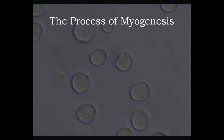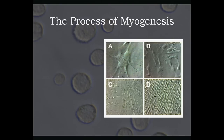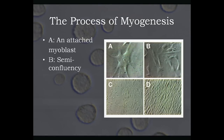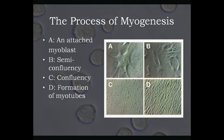This slide will illustrate the process of myogenesis. Picture A is of an attached myoblast to a container surface. Picture B is of semi-confluency, and picture C is of confluency. When myoblasts become confluent, they basically stretch out and form filopodia, which look a lot like arms. And picture D is the formation of myotubes.